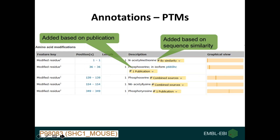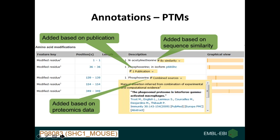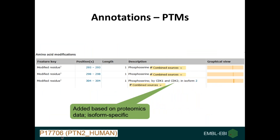But it doesn't stop there. Proteomics data also help us to provide post-translational modifications and annotate them onto sequences. Such PTMs can be added onto sequences based on sequence similarity, as shown in the first box, or based on publications — that is to say backed up by published experimental information — or thirdly, based on proteomics data. Most of these data also come with a publication. The example in the middle, added based on a publication, is specific to an isoform and was extracted from a publication by a curator.